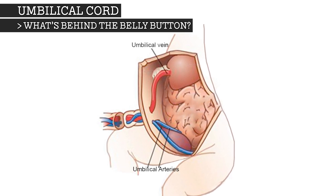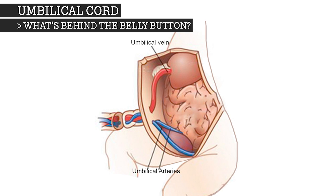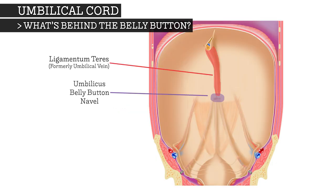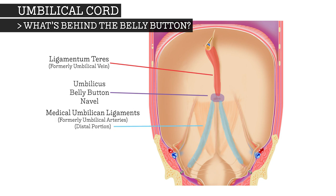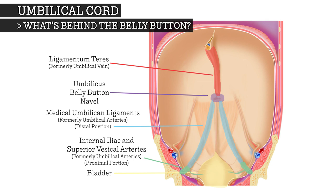After birth, internally, there is still an umbilical vein and two umbilical arteries. The umbilical vein collapses and becomes a ligament, which is a tough connective tissue that remains attached to the inner belly button and the liver, serving no real purpose. The sections of the umbilical arteries closest to the belly button also become ligaments, remaining attached to the belly button area, providing no function other than to support the bladder — which is why pushing your belly button may cause a sensation in your bladder. The more internal sections of the umbilical arteries remain part of the circulatory system, supplying blood to the bladder, ureters, and in men, the vas deferens.